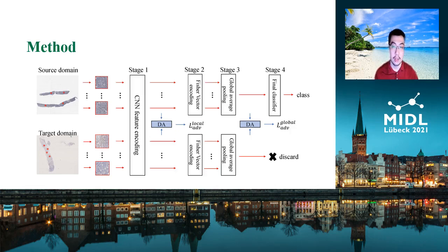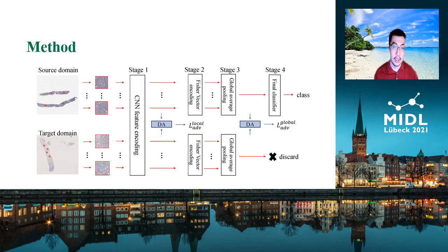It outputs two domain labels, and our training goal is to confuse the domain classifier so that the features are aligned after training. This is achieved by attaching a gradient reversal layer in front to enable adversarial training. Besides forwarding the features to the local domain adaptation part, both source and target CNN-encoded features are passed to the next stages. They are further processed by Fisher vector encoding and global average pooling. We insert another domain classifier at this stage to align the aggregated features, adapting the feature distribution shift of the entire Whole Slide Image.